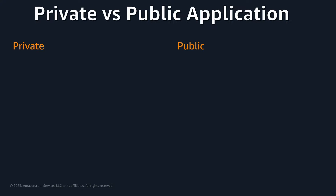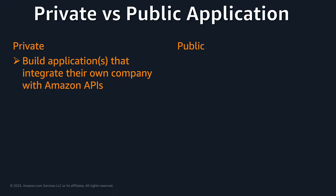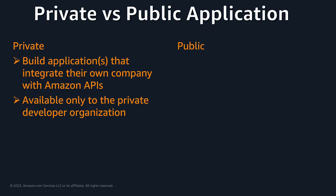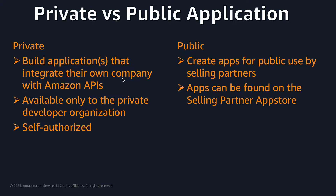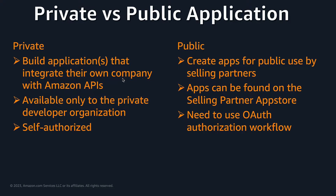Before we get started, let's understand the difference between a private and public application. Private developers build applications that integrate their own company with Amazon APIs. A private application is available only to that developer's organization and is self-authorized — this could be either a seller or vendor building for their own organization. On the other hand, public developers create public apps for use by selling partners, and their apps are published on the Selling Partner App Store. They need to use the OAuth authorization workflow.